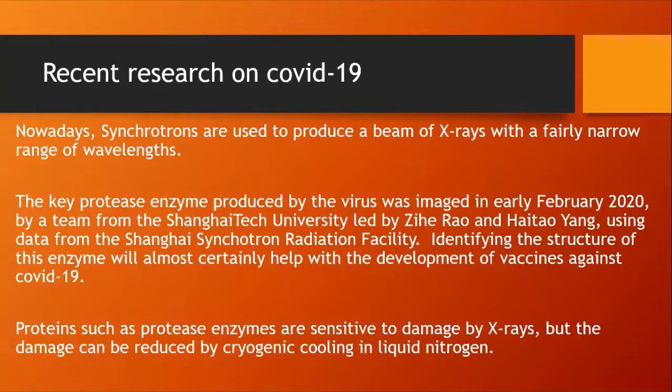Nowadays synchrotrons are used to produce a beam of x-rays with a fairly narrow range of wavelengths. The key protease enzyme produced by COVID-19 was imaged in early February of this year by a team from Shanghai using data from the Shanghai synchrotron radiation facility, and this identification will almost certainly eventually help with the development of vaccines against COVID-19. Incidentally, proteins such as protease enzymes are sensitive to damage by x-rays, particularly intense beams of x-rays, but the damage can apparently be reduced by cryogenic cooling in liquid nitrogen because x-rays energetically can pack quite a punch.